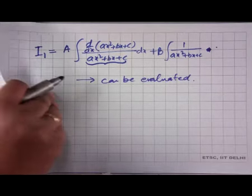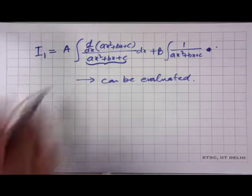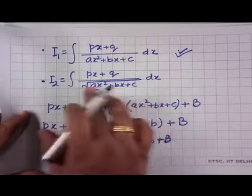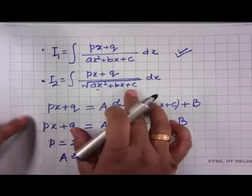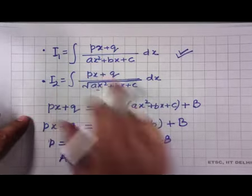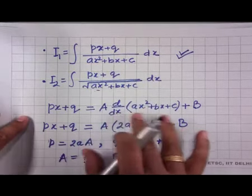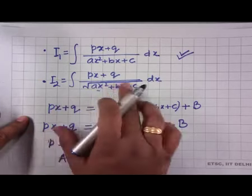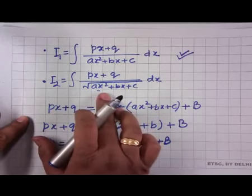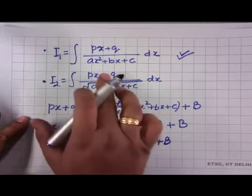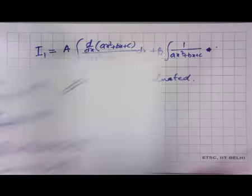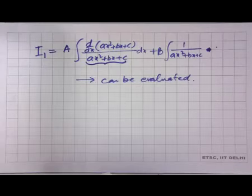We will see this with the help of an example. A similar procedure applies when the denominator has a square root: in that case, the first part yields 2√(ax²+bx+c), and the second part is evaluated using the square root formulas.